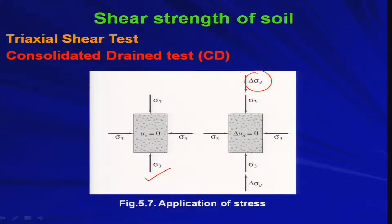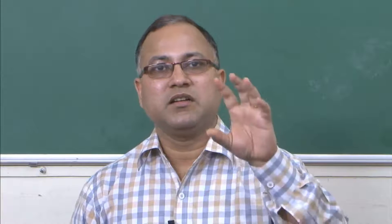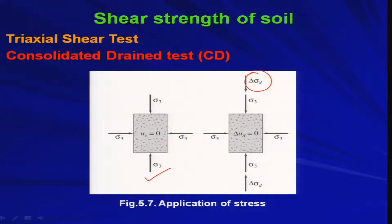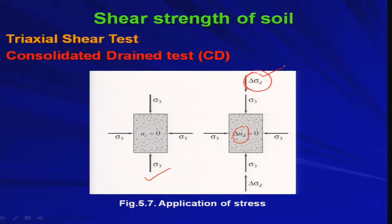When you apply delta_sigma_d, at that time you are keeping the drainage valve open, so whatever excess pore water pressure builds up will also drain out. That is why it is known as the Consolidated Drained test: at the first instance when you apply sigma_3 all-round, you consolidate the sample by allowing drainage, and then during the test when you apply delta_sigma_d, you also allow drainage.